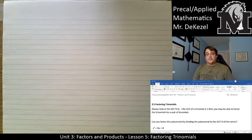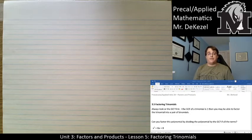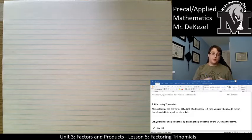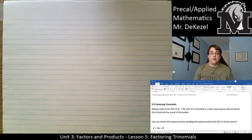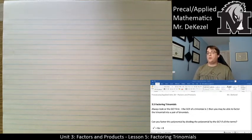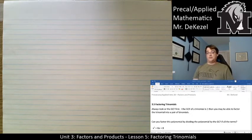Hello everyone, welcome back to another lecture. We're on lecture 5 in the third unit, Factors and Products. This is all about factoring trinomials, so this is like going backwards from what we were doing before. We were taking two binomials and making a trinomial. Now we are going to take a trinomial and get it into two binomials. I'll show you how that all works. We have some rules to go through first.